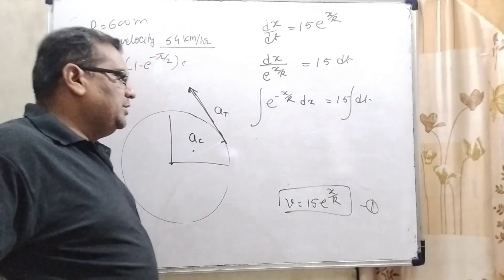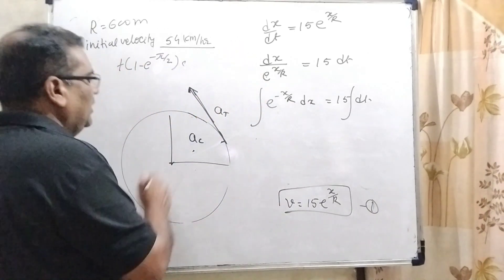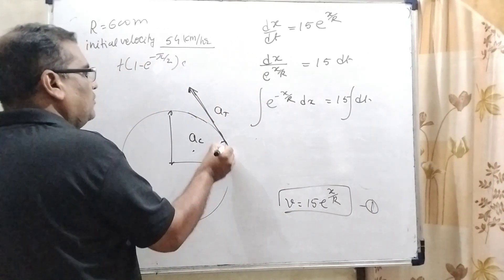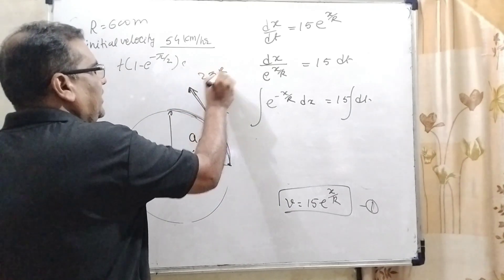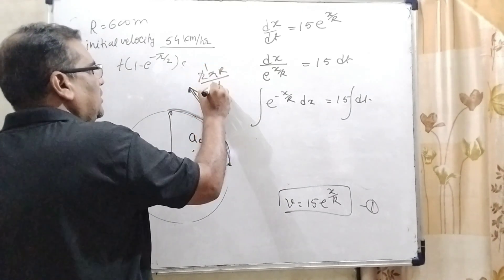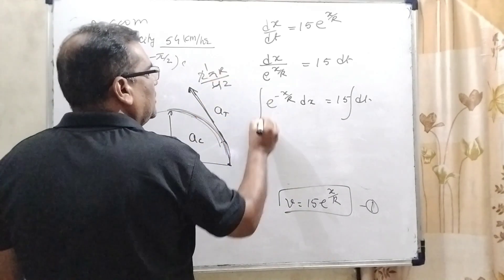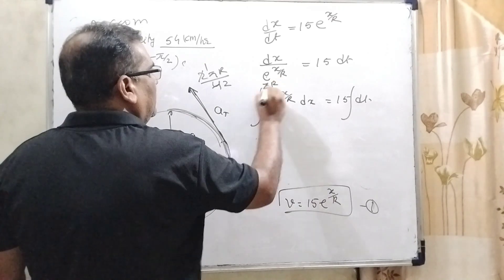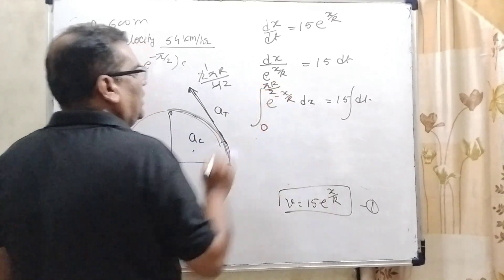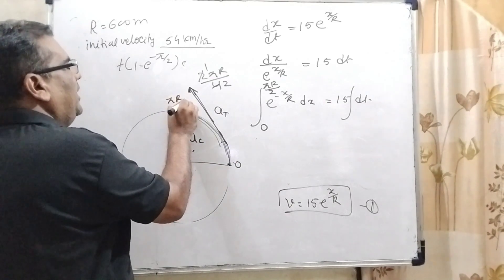Now we apply the limits. What is the limit? Given that the car travels one quarter of the circumference. Circumference is 2πr, and one quarter means dividing by 4, which gives πr/2. So the limit is 0 to πr/2.